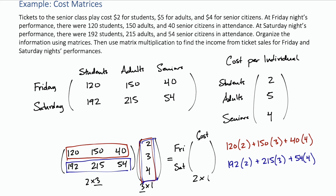Plugging these into a calculator gives us $850 for the first one and $1,245 for the second. So there's our income matrix that tells us the revenue for each of those nights.